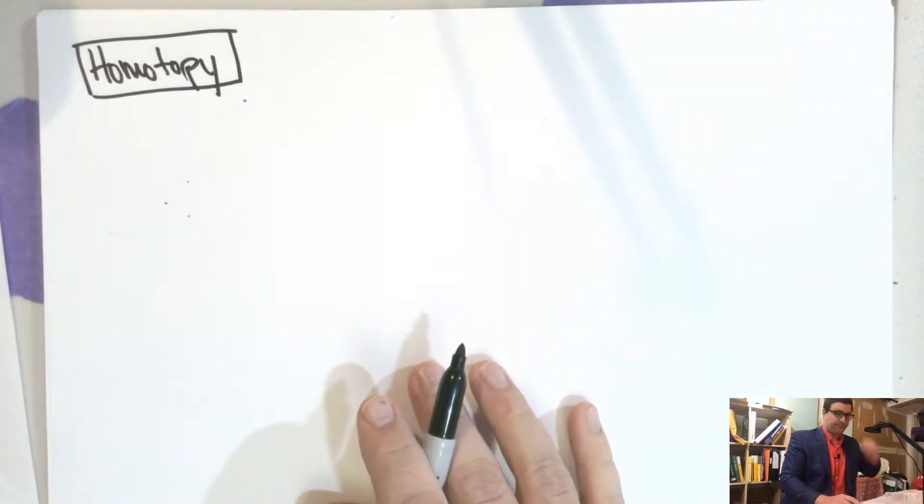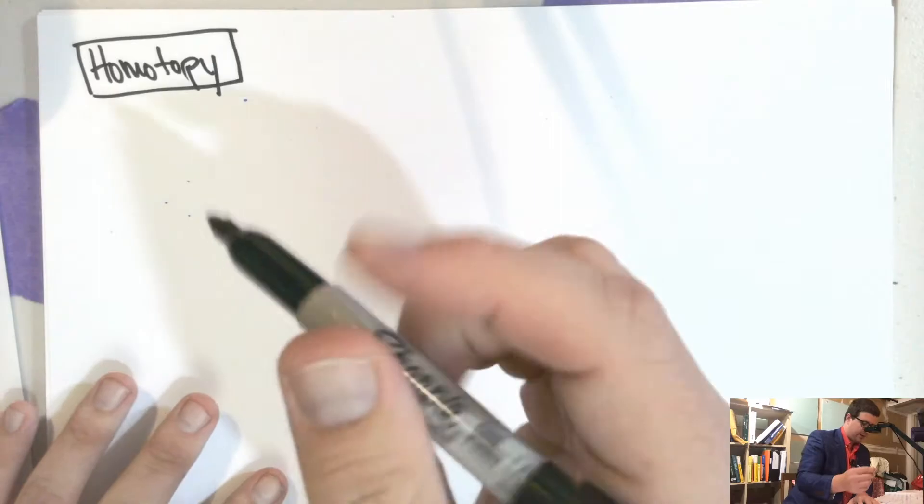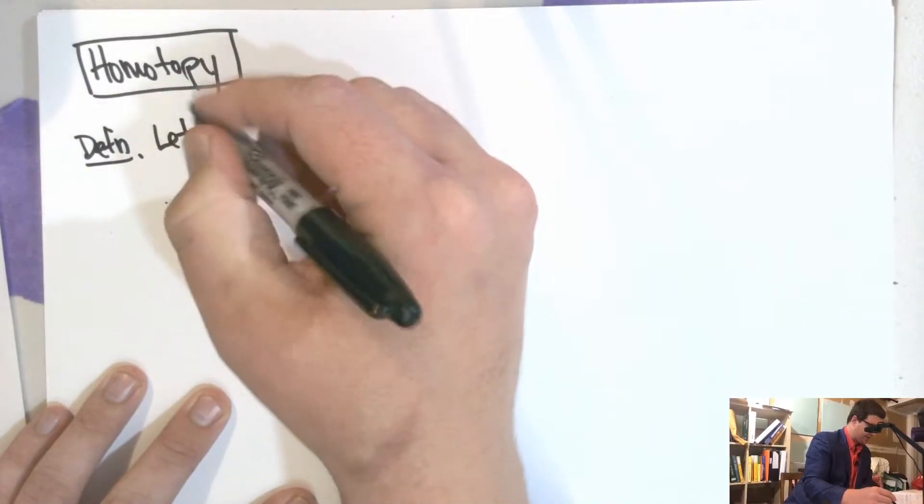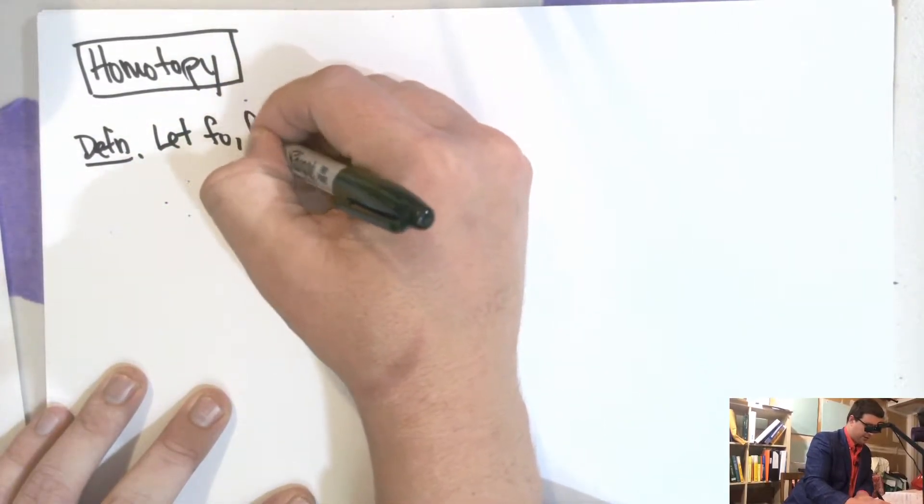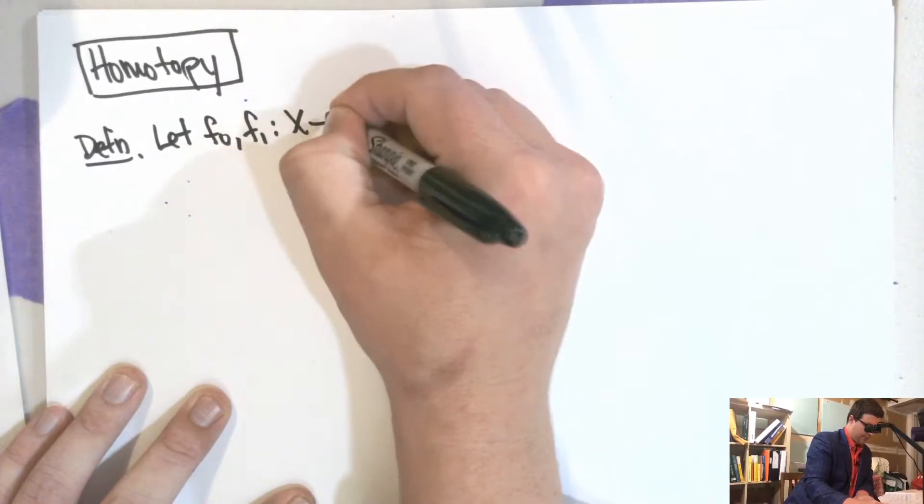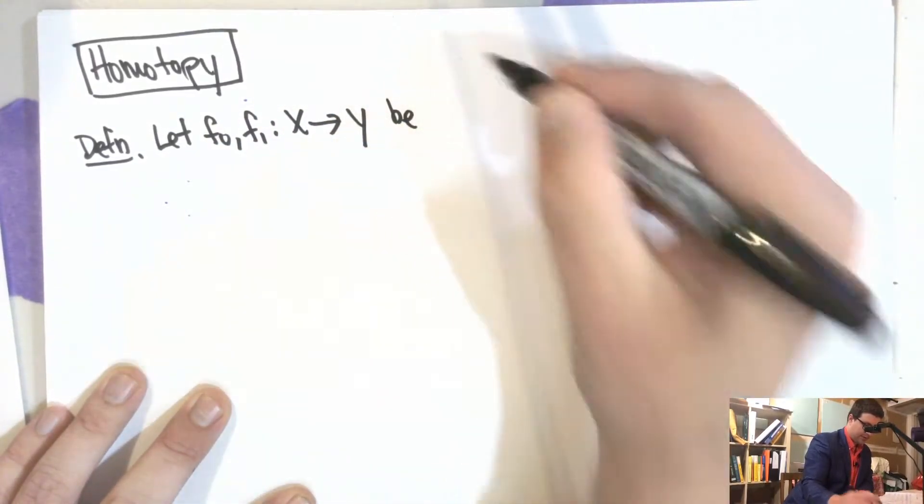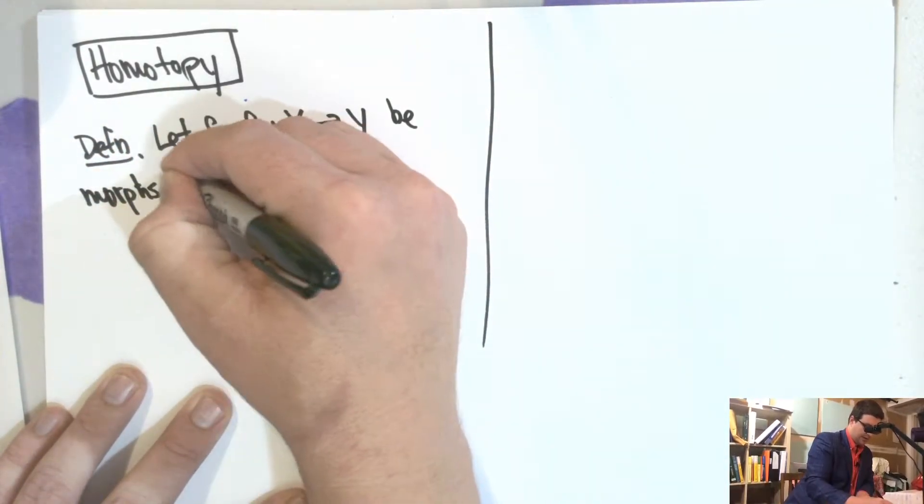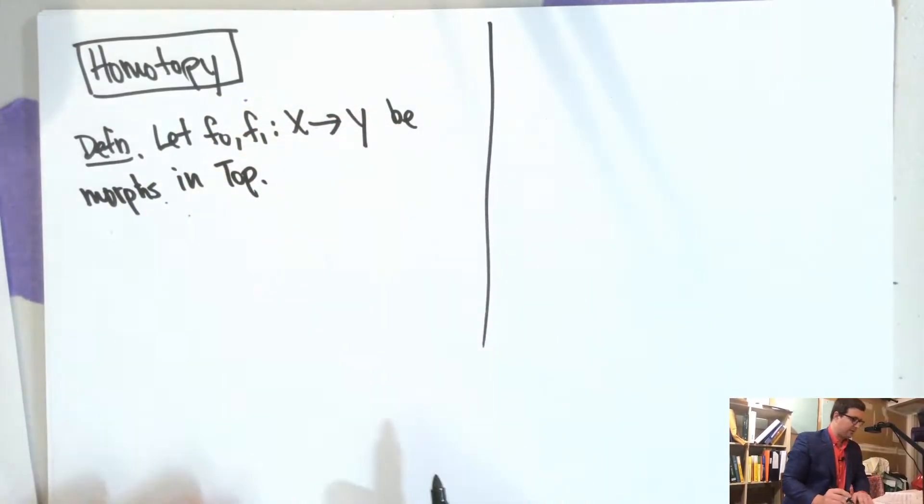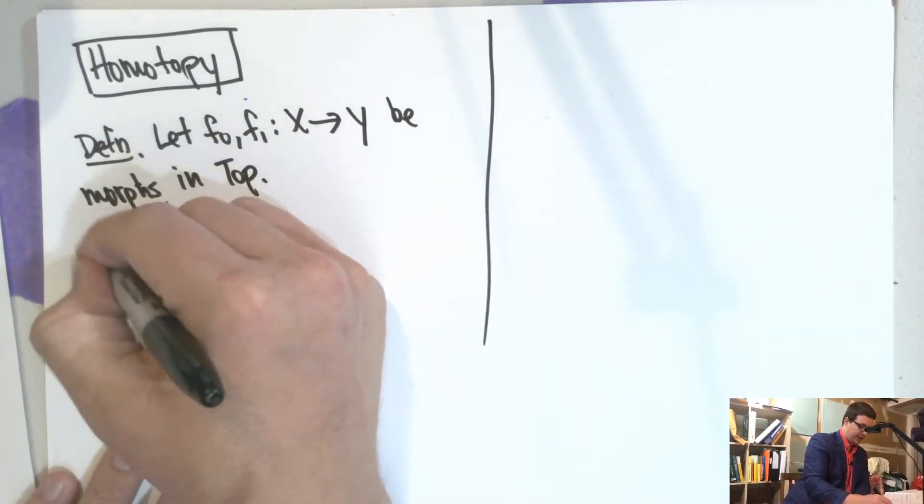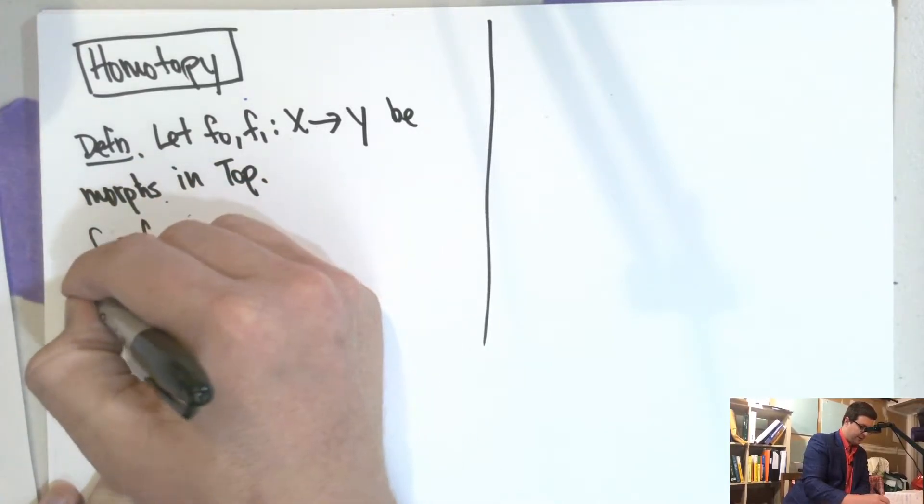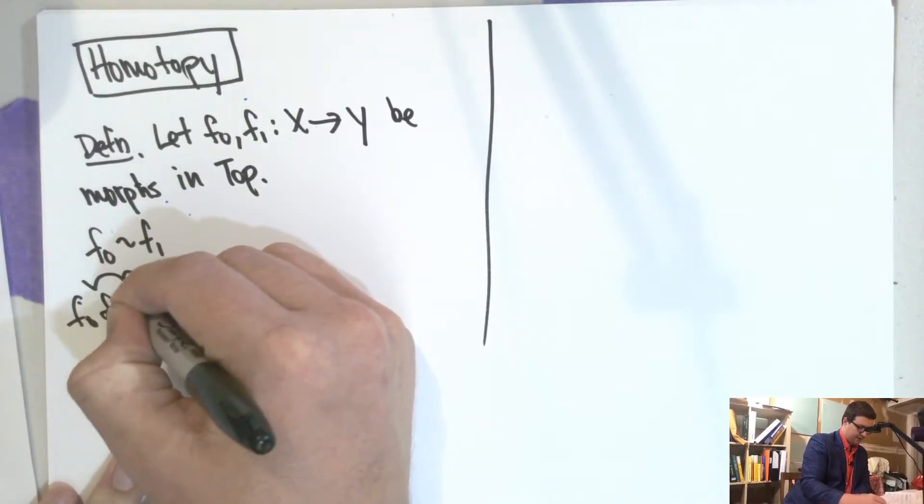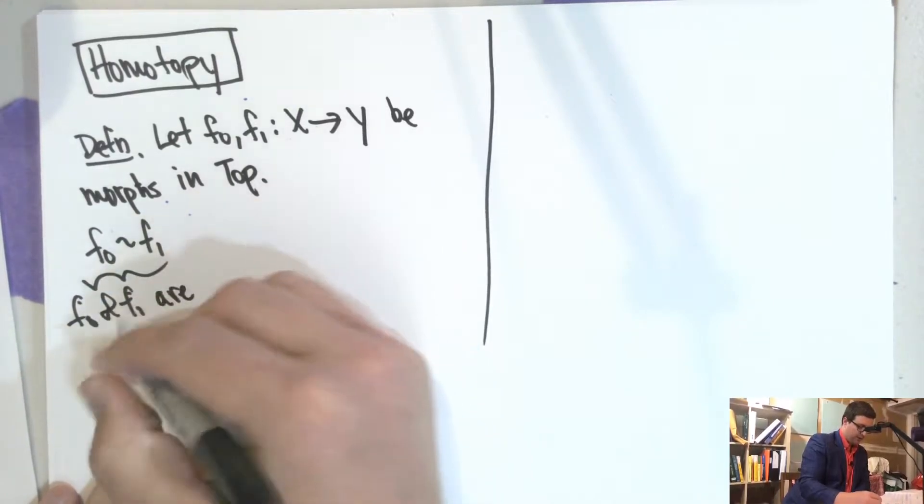All right. So, let's define it. Let F0 and F1 be maps, morphisms in topological spaces. Then we say that F0 is related to F1. This means that F0 and F1 are homotopic.